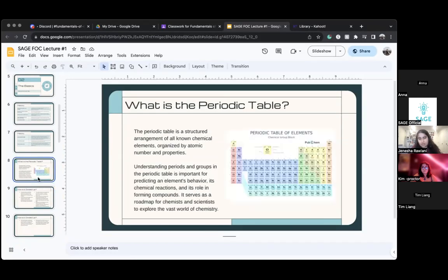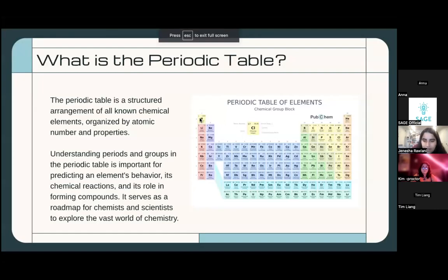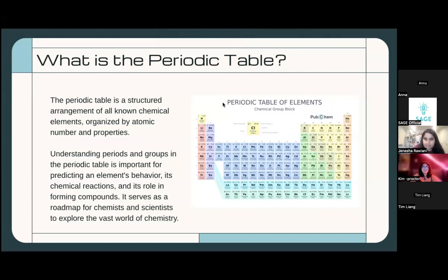The atomic number means that every element is associated with one atomic number. For example, you can see chlorine — chlorine's atomic number is 17, which means it's number 17 on the periodic table. If you count all the way down to 17, which is at the end of the third row, the third period, you have chlorine.